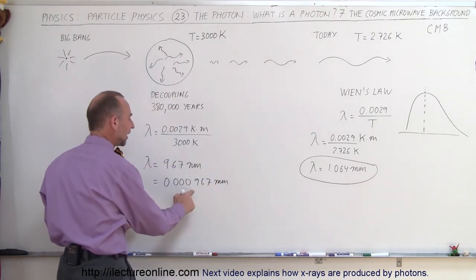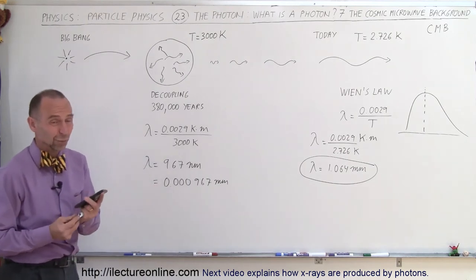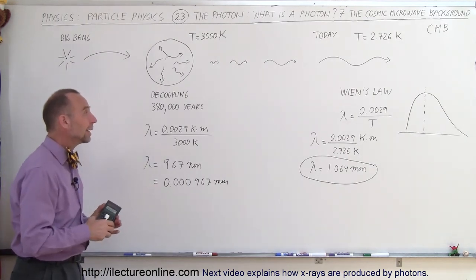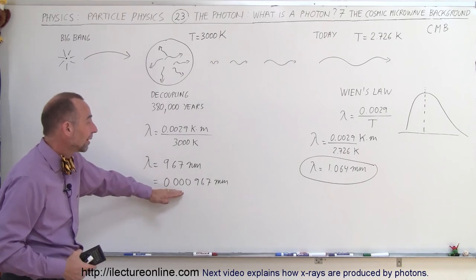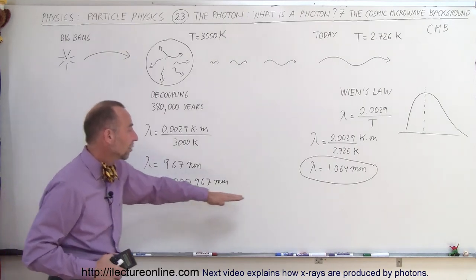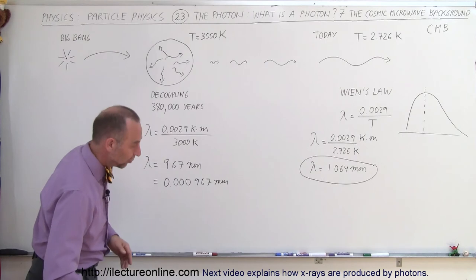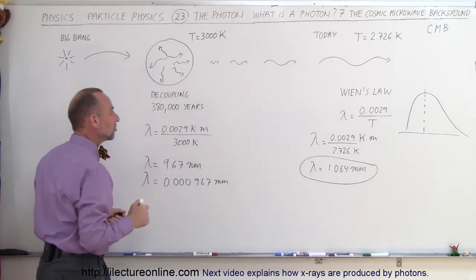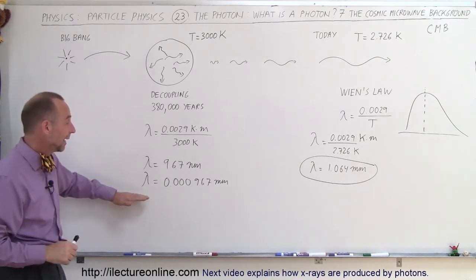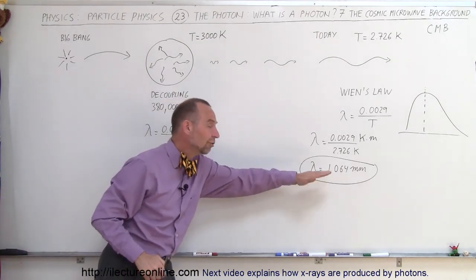Notice the wavelength of the light back then, or I shouldn't say light, it's really at that point it was infrared radiation. The cosmic microwave background, the wavelength was about a little bit less than 1,000 times smaller than it is today. So this is what it was at the beginning universe after decoupling, 380,000 years after the universe started, and it has grown in size to this value right here.